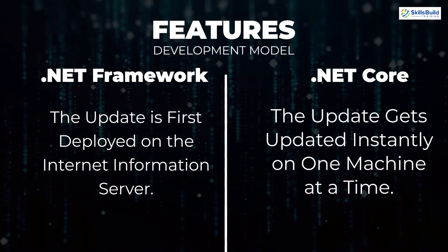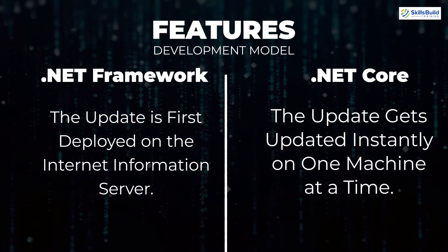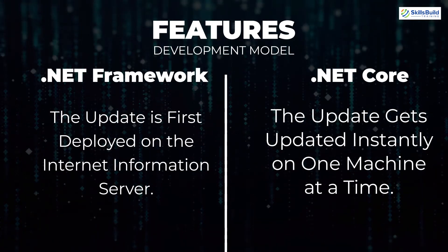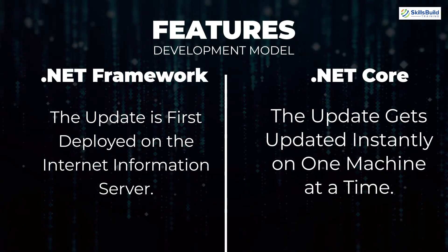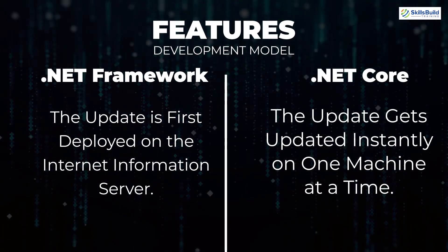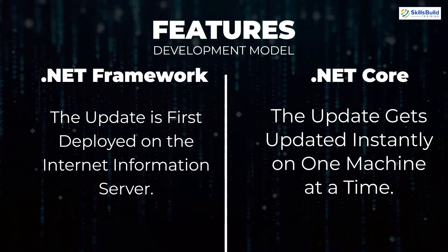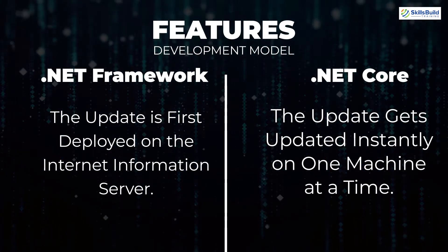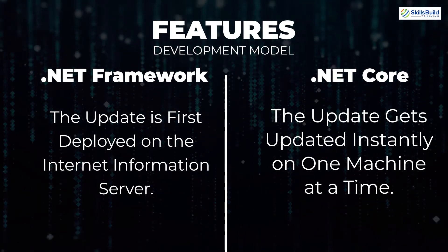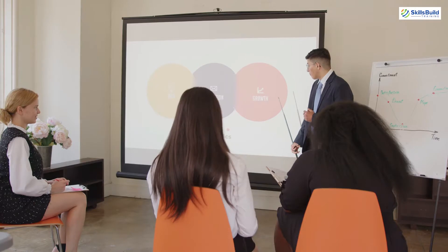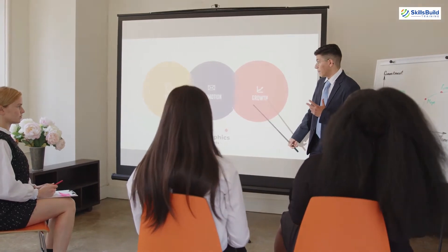The last feature is the development model. In .NET Framework, whenever an updated version is released, it is first deployed on Internet Information Server. In .NET Core, when a new update is initiated, it gets updated instantly on one machine at a time and updates in new directories within the existing application without affecting it. Because of that, .NET Core has a good and flexible deployment model.